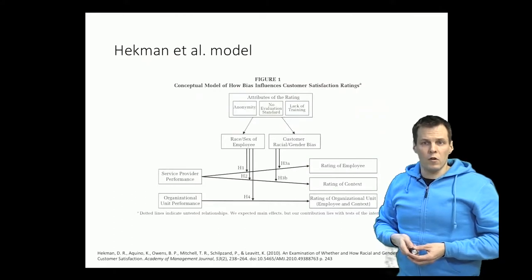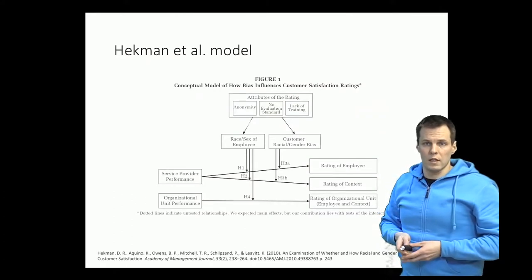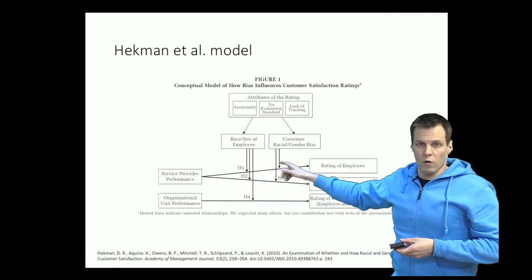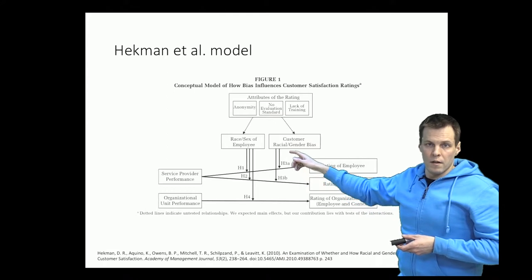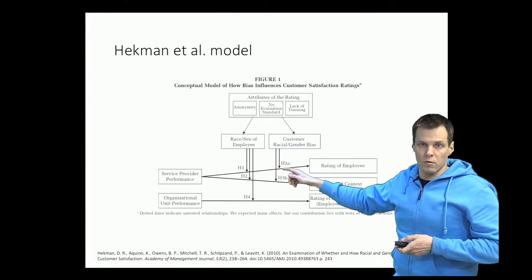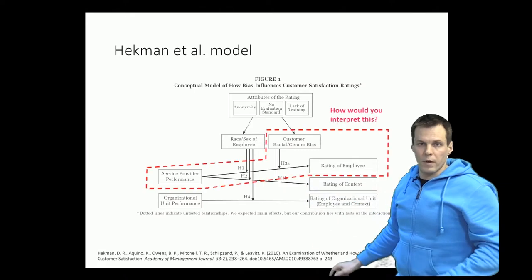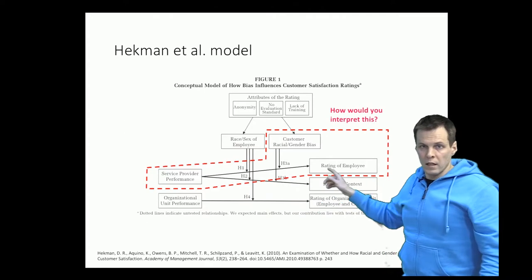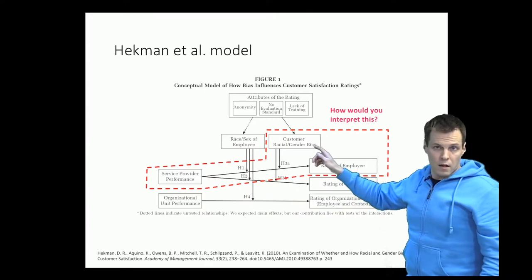A typical way of drawing these models is to draw boxes and then you have an arrow which presents a causal relationship or a recursive relationship, and then you have these arrows from the third box that go to the middle of this arrow. This particular paper studies the effect of service provider performance on rating.